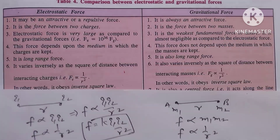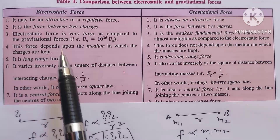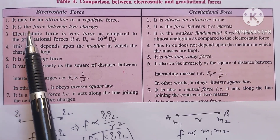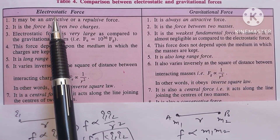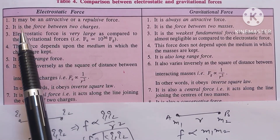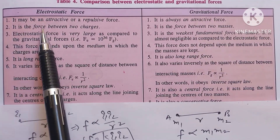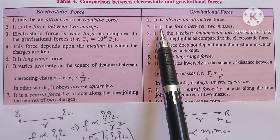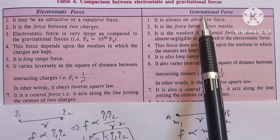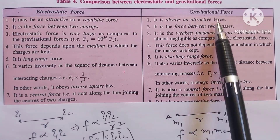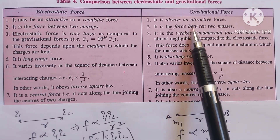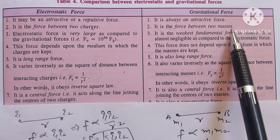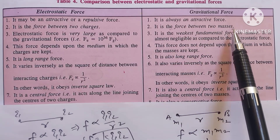The second point about electrostatic force is that it is a force between two charges. And gravitational force is a force between two masses.